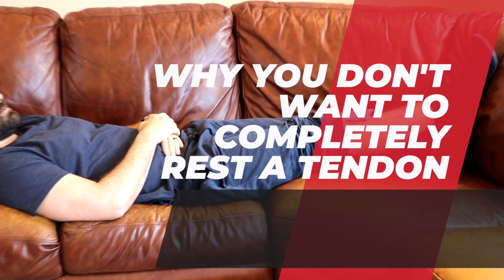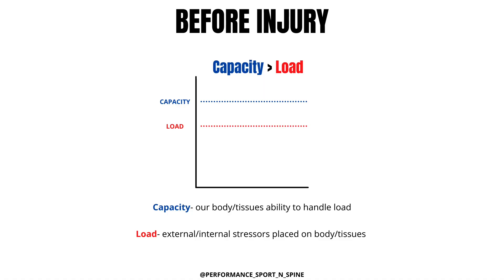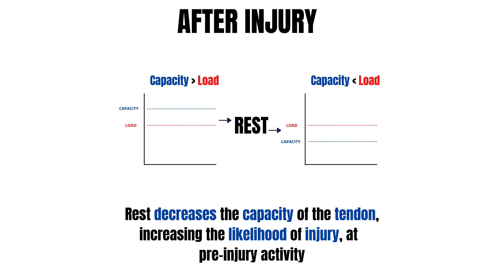Now we're going to talk about why you don't ever want to completely rest the tendon — this is probably the most important part of this whole video. Looking at this graph, we can see schematically that a person's capacity is greater than their load, where capacity is the body's ability to handle stress and load is both internal and external stress placed upon the body. This person has a margin of safety or a buffer. But what happens is you get tendon issues and there's pain, so the intuitive thing is to rest it for several weeks. The pain does go down, but the problem is the capacity also goes down. If we return to the same activity prior to the injury, our load is now above our tendon's capacity, setting us up for an increased likelihood of injury.